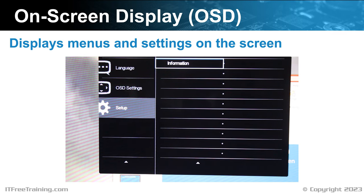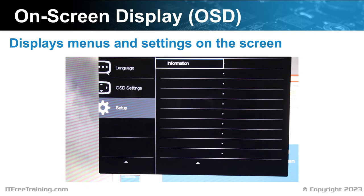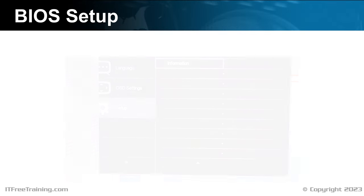The last option in the sub-menu is Information. This will give us information about the model and serial number. If you are looking through the menu for a smart TV, this may also tell you information such as what firmware the smart TV is using. In some cases, you may be setting up multiple monitors or adding a second monitor to an existing computer. When this occurs, you may need to make some changes to the BIOS.